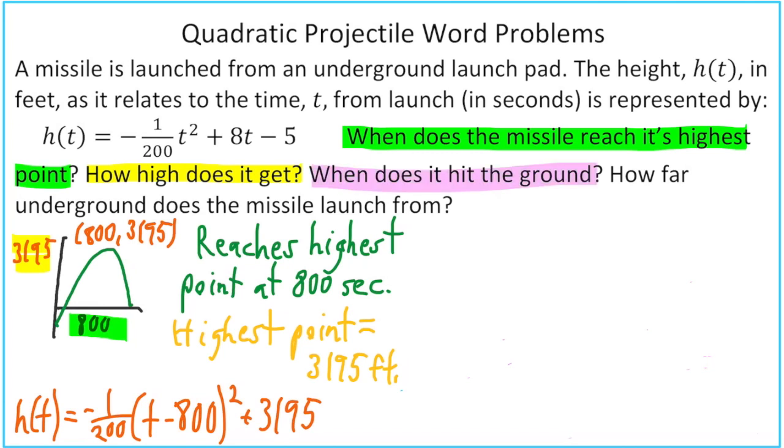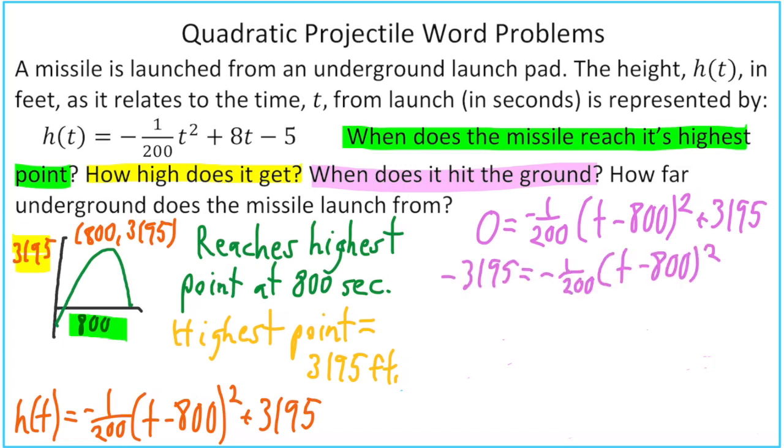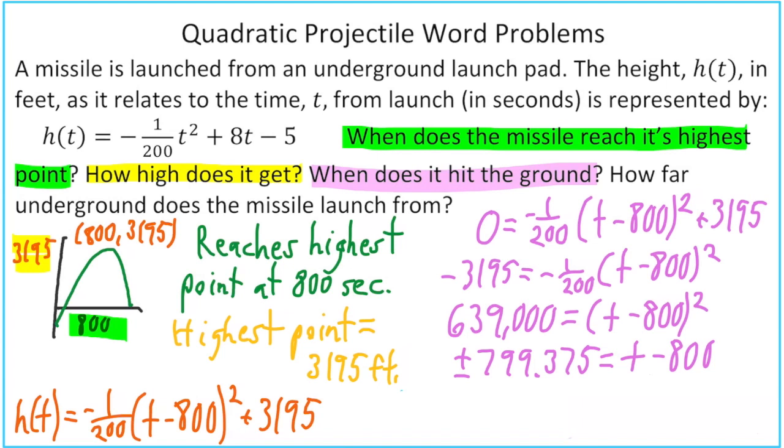When does it hit the ground? So this is the part that's a little harder than what we did in the intro videos. We have to solve this by setting our vertex form equal to zero for the h of t. We'll move our 3,195 to the left side where it becomes negative. Now we've got to get rid of our fraction. We would multiply both sides by negative 200. And that gives us 639,000 is equal to t minus 800 squared. We take the square root, and I'm going to go ahead and change it to a decimal, three decimal places. And we get plus or minus 799.375. That's going to be equal to our t minus 800.